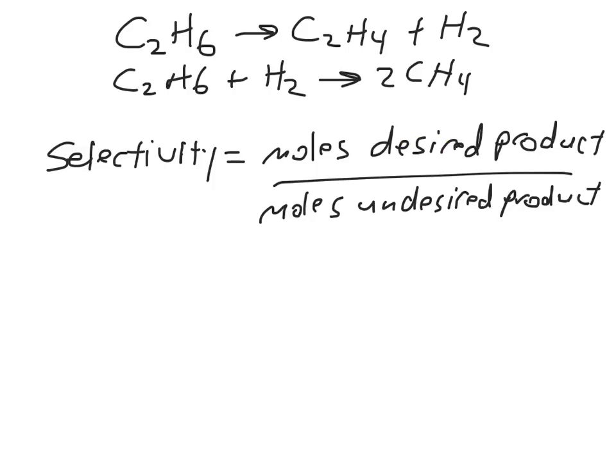So oftentimes we may have multiple reactions taking place, and we will only want one reaction to take place. And another reaction may be a side reaction that produces molecules we don't want. So for instance, in this case, let's just assume that this is the reaction we want to take place. We want C2H6 to form C2H4. This is our desired product. We want to make C2H4.